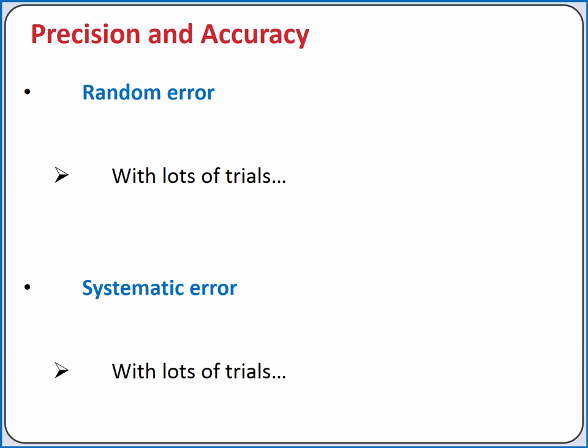Systematic error, on the other hand, is a consistent error. For example, if I were measuring a length, but I was using a ruler that started at 2 inches instead of 0 inches, all of my measurements would be off by 2 inches. No matter how many times I repeat the experiment, my measurements would be off by 2 inches.